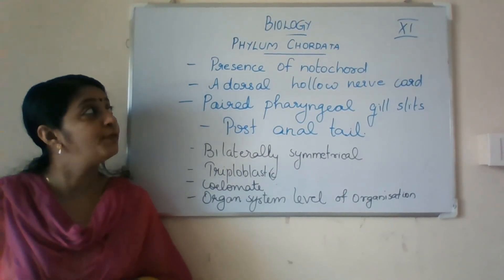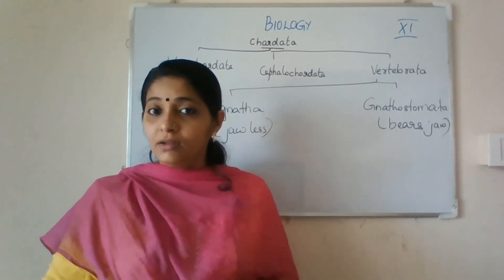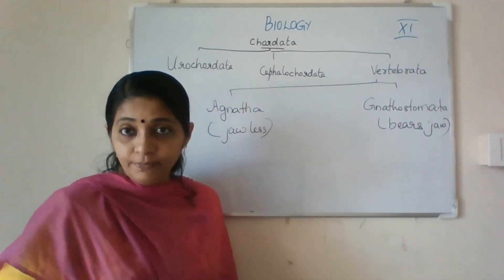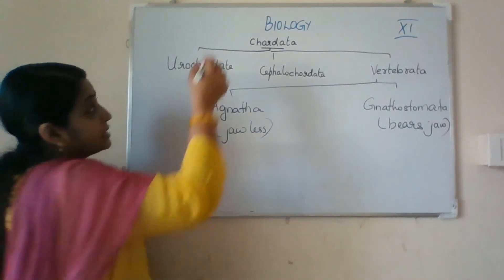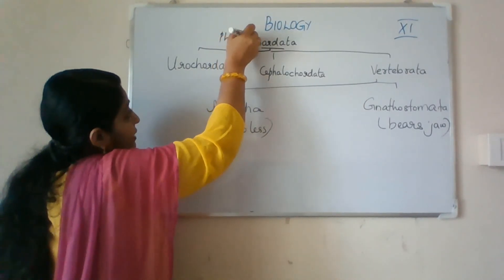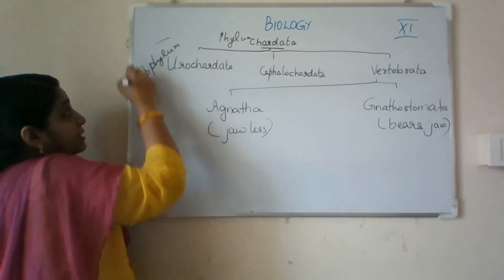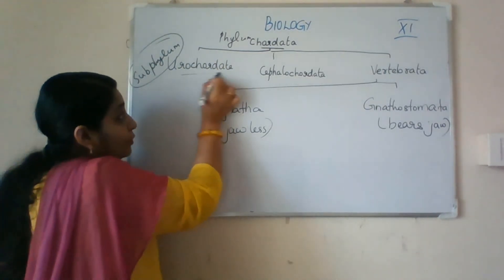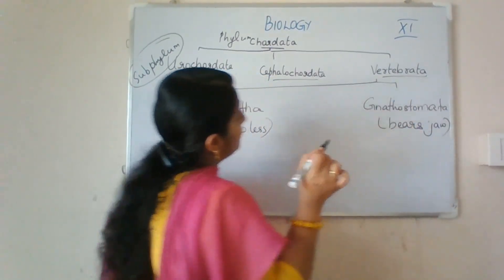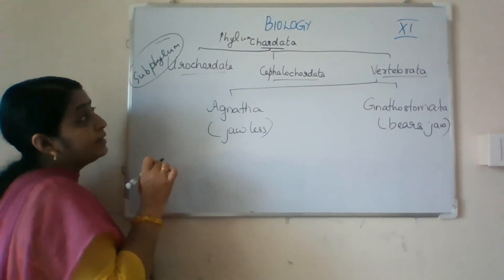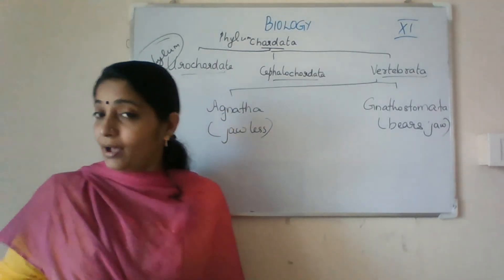Now we have to see how Phylum Chordata has been classified. Phylum Chordata is classified into three subphyla: Urochordata, Cephalochordata, and Vertebrata.